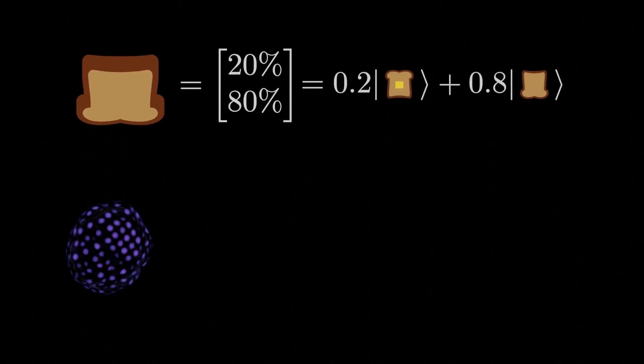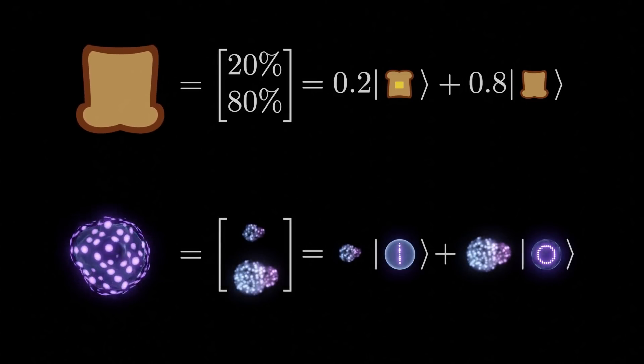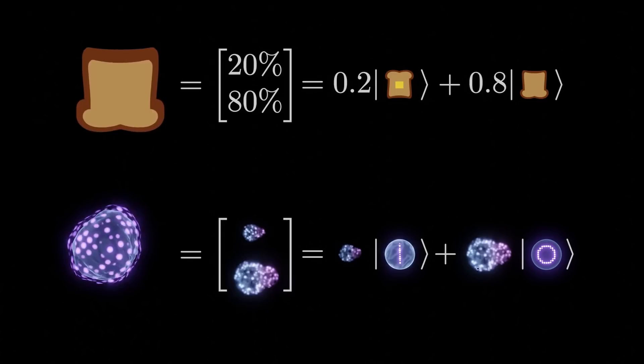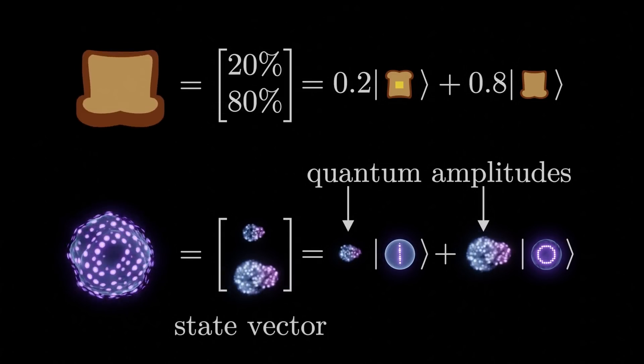We can describe a superposition in a very similar way, except instead of using percentages, we use complex numbers. When used in this way, they are sometimes called quantum amplitudes, and collecting them all together, we get a state vector.